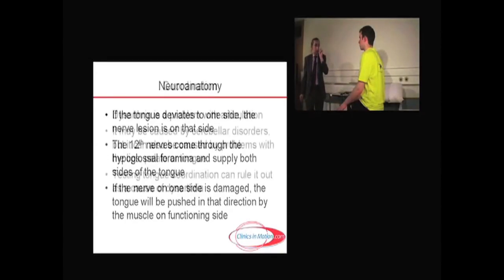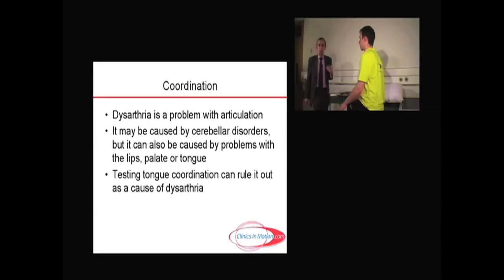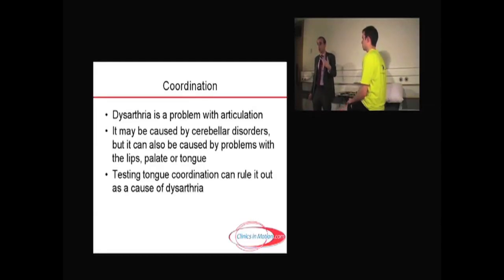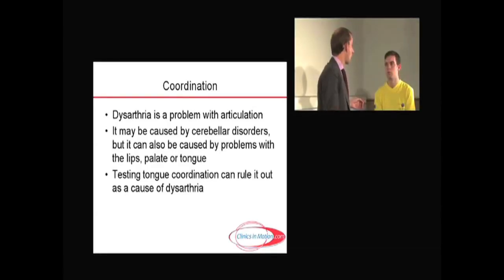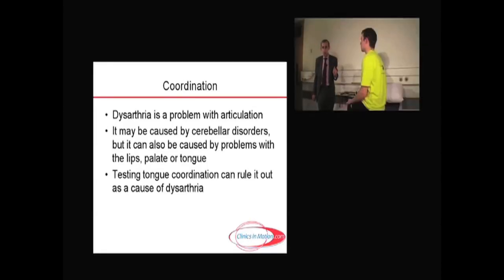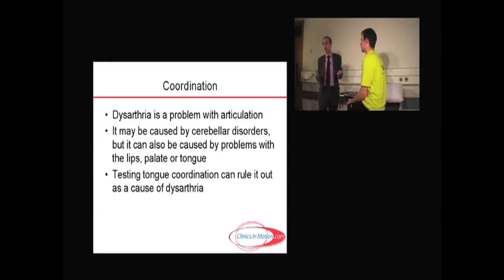The other thing you can test is coordination. Dysarthria, as you'll find out later, is a difficulty with articulation, which may be due to cerebellar disorders and other disorders, but it can simply be due to something wrong with your lips, your palate, or your tongue. So you ask the patient to move the tongue side to side, as quick as they can, to look at coordination. This helps see the rapidity of movement, which can be altered in cerebellar disorders in particular.